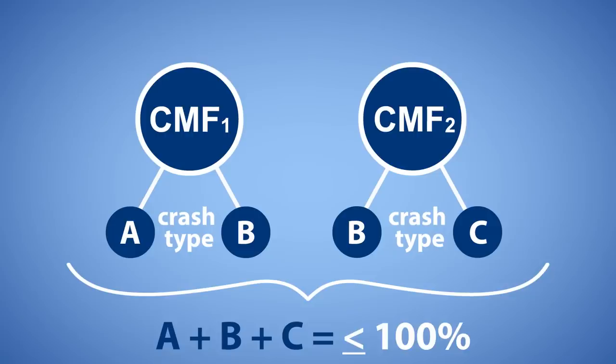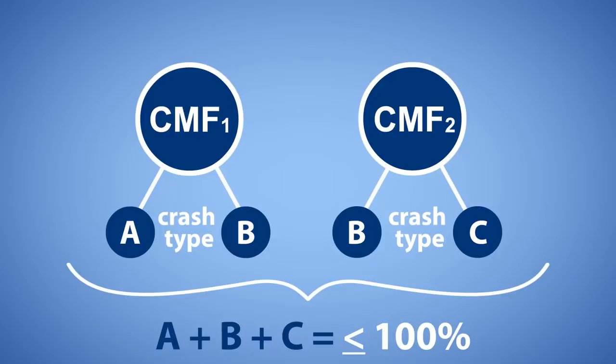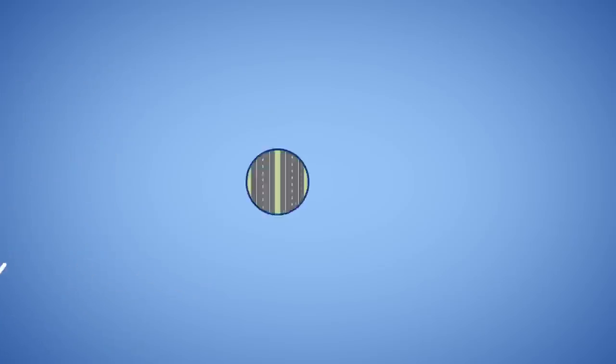If the estimated change exceeds 100%, assume the maximum reduction of 100%. The key is to first apply each CMF individually to any crashes applicable to that CMF but not to the other CMF. Then, estimate the CMF and apply it to the applicable crashes common to both CMFs.